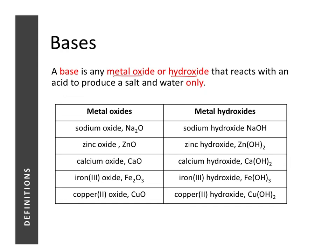In the table below we see a list of metal oxides and hydroxides — all of them are bases. Some bases can dissolve in water and some cannot. All metal oxides are insoluble in water except for SPA oxides, where S stands for sodium, P stands for potassium, and A stands for ammonium.